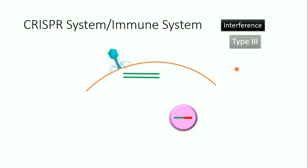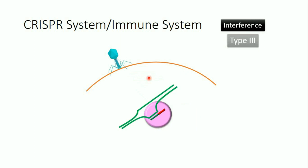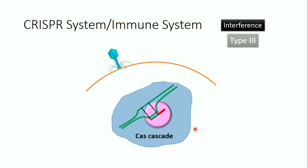In type 3, there is no PAM. The RNA sequence recognizes its complementary sequence on the viral genome, they bind together, and there is also a cascade of Cas enzymes like type 1, resulting in the viral genome being chopped up.